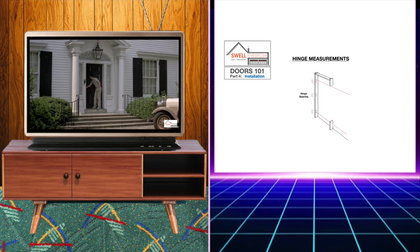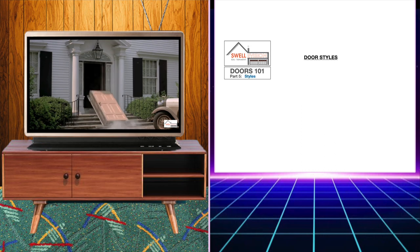The hinge spacing for the three hinges on an exterior door will be 29 inches. This is measured from the top of the hinge to the top of the next hinge.